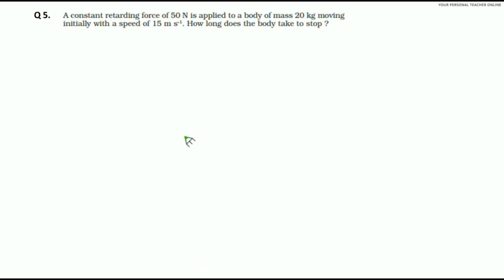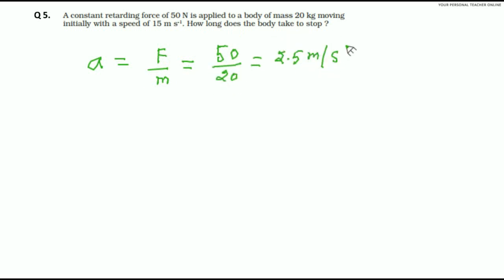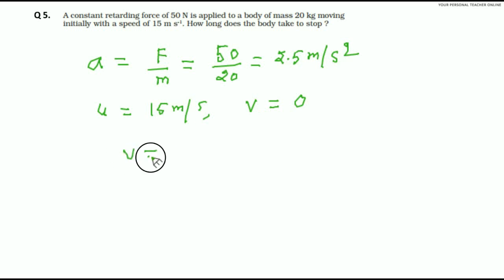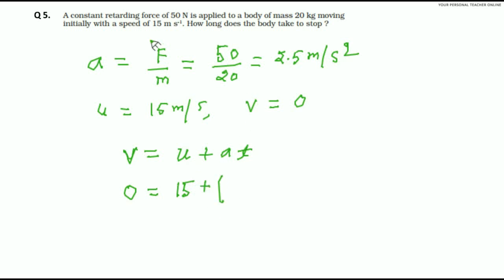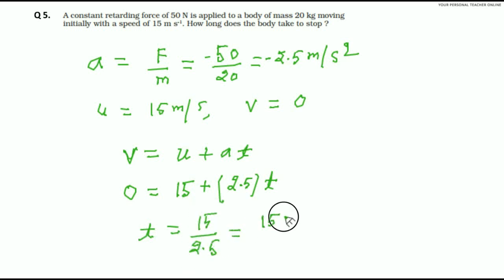A constant retarding force of 50 Newton is applied to a body of mass 20 kg moving initially with a speed of 15 meter per second. How long does the body take to stop? Acceleration equals force by mass equals 50 divided by 20, that is 2.5 meter per second square. Initial velocity u equals 15 meter per second and final velocity equals 0. Using v equals u plus at: 0 equals 15 minus 2.5 into t. So t equals 15 divided by 2.5, that is 150 divided by 25, equals 6 seconds.